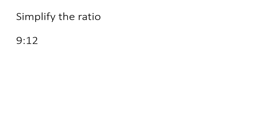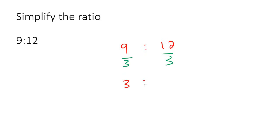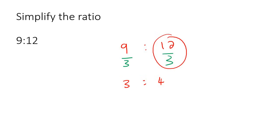Here we have nine and 12. You're not going to use the number two, because two cannot go into nine. But the number three can go into both, so then that'll become a three and a four. Now what number can go into both of these? There's no number that can go into both of those, unless you use the number one, but that's not going to change anything. So this would be the most simplified answer.